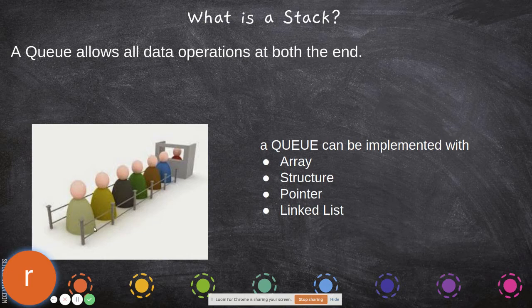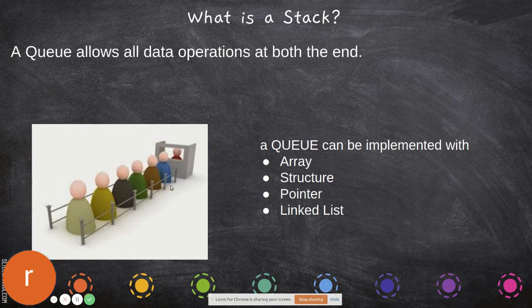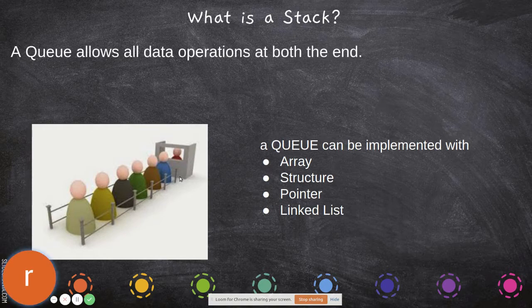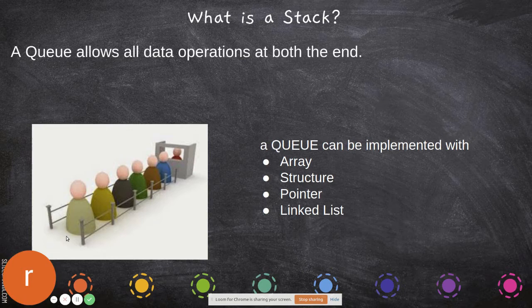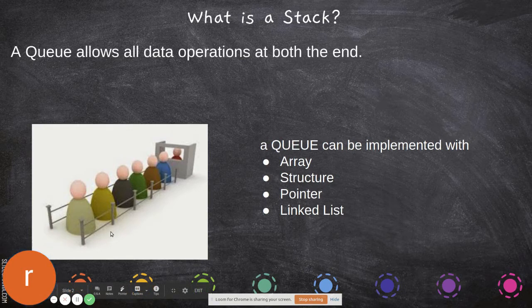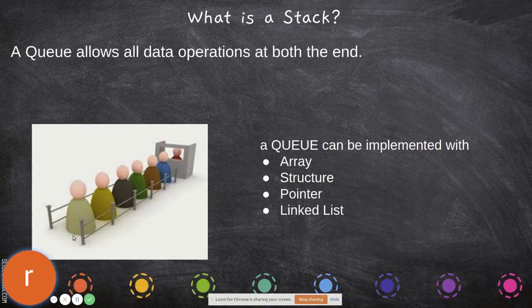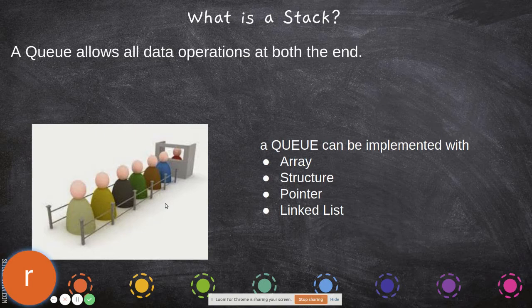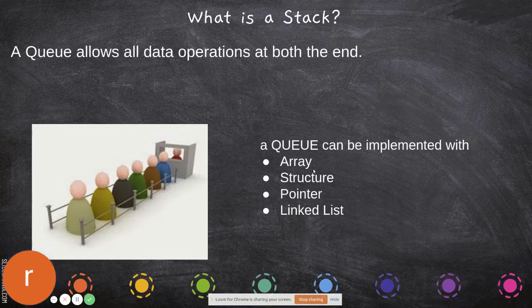whether the queue is full or empty. If the queue is empty, you cannot remove anything. If you want to add, there must be space. If the queue is full and you try to add, it will give an overflow condition. During addition, check if there is space; during removal, verify if there is any element. The queue can be implemented with arrays, structures, pointers, and linked lists. In this video, we are going to see how to implement a queue using arrays.